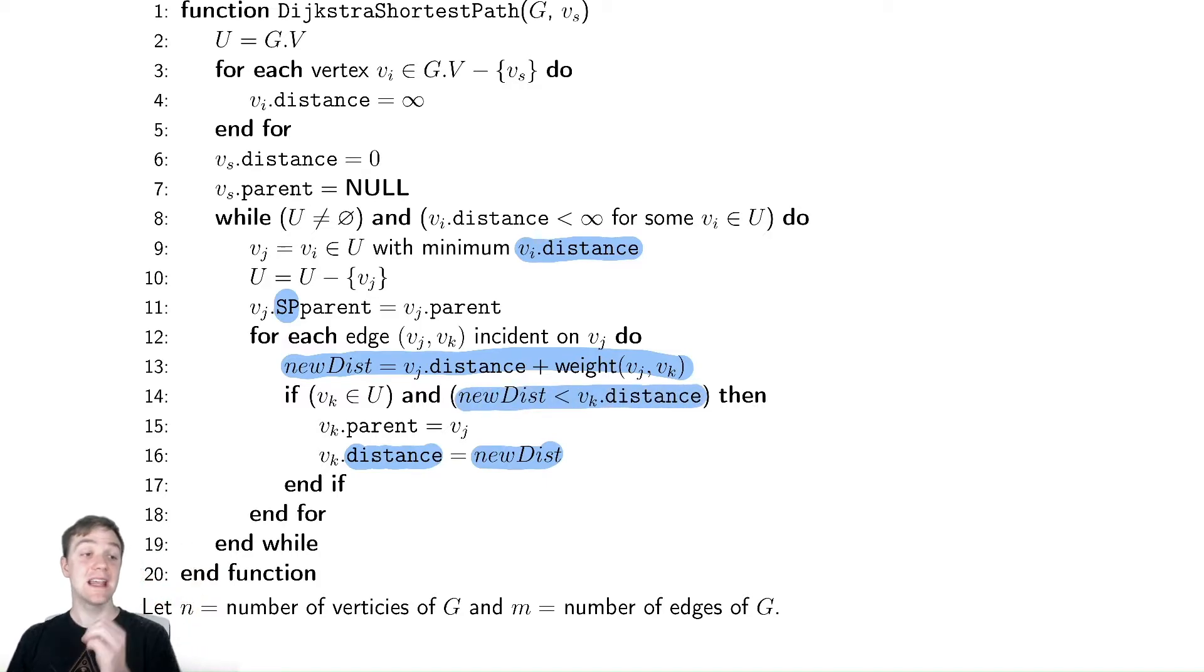Otherwise, it is identical to the code that we looked at for the minimum spanning tree. And again, it will have identical runtime because the only thing we're changing is rather than looking at weight, we're looking at distance plus weight. And accessing that field inside of the node and then adding the weight to it is a constant time operation. Therefore, it will not affect the runtime.